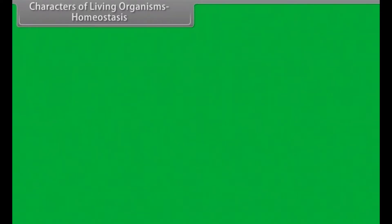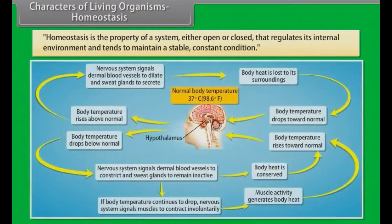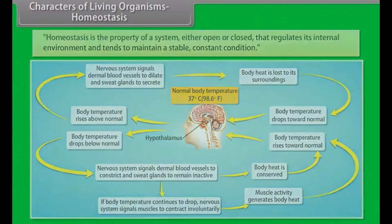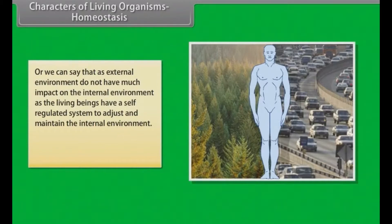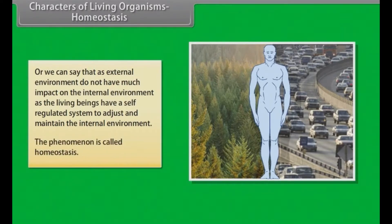Homeostasis is the property of a system, either open or closed, that regulates its internal environment and tends to maintain a stable, constant condition. The external environment does not have much impact on the internal environment, as living beings have a self-regulated system to adjust and maintain their internal environment. This phenomenon is called homeostasis.